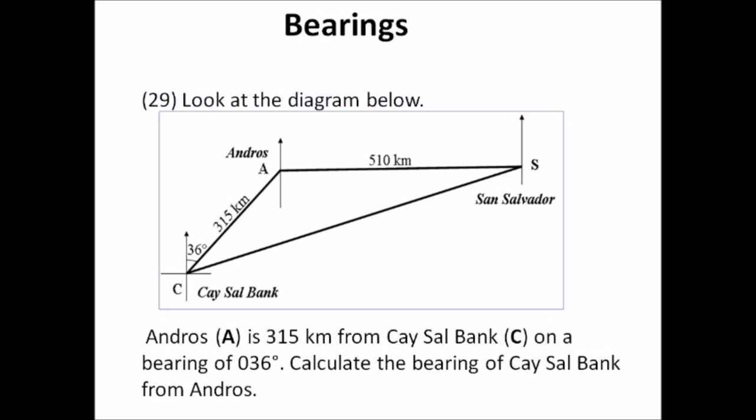Number twenty-nine: bearings. Andros is 315 kilometers from Quiesel Bank on a bearing of 036 degrees. Calculate the bearing of Quiesel Bank from Andros. Read carefully — the bearing of Quiesel Bank from Andros. Remember, bearings are always taken from north. The north lines are shown in the diagram for you.